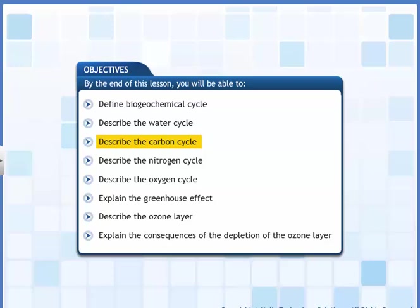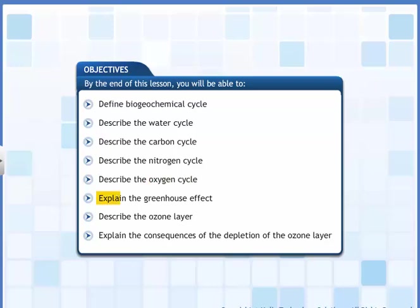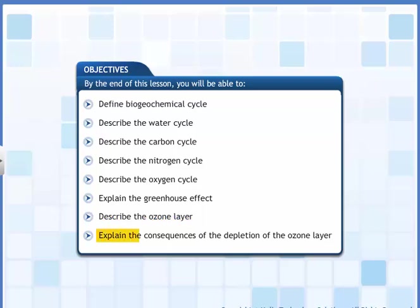You will also be able to describe the nitrogen cycle, describe the oxygen cycle, explain the greenhouse effect, describe the ozone layer, and explain the consequences of the depletion of the ozone layer.